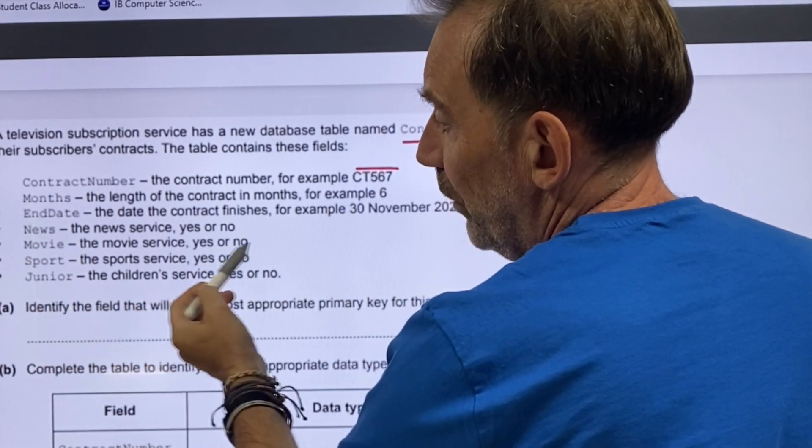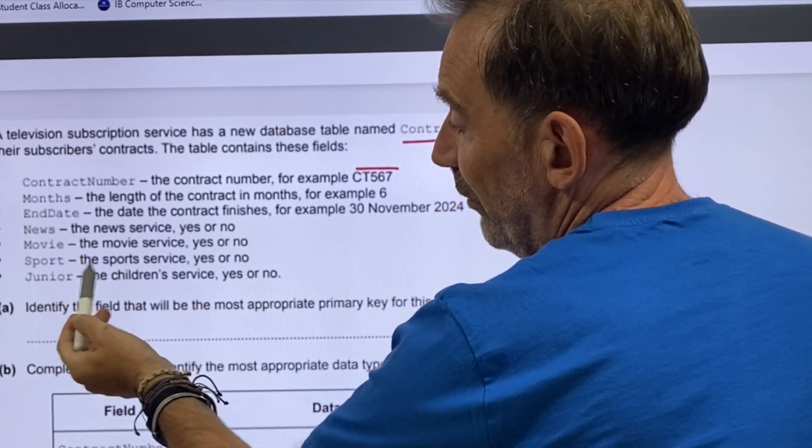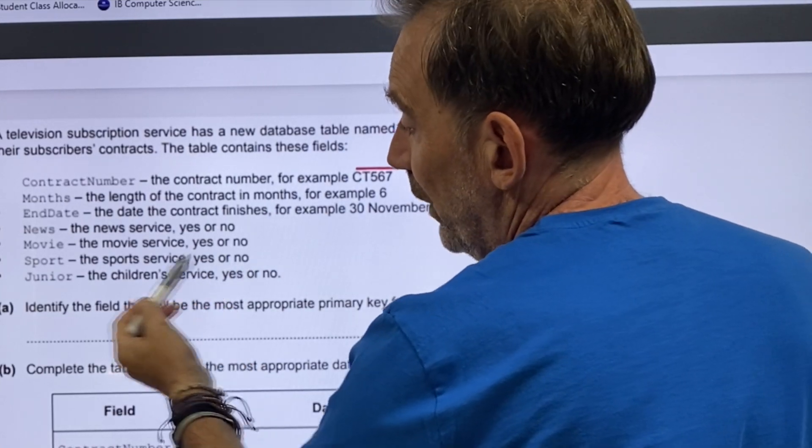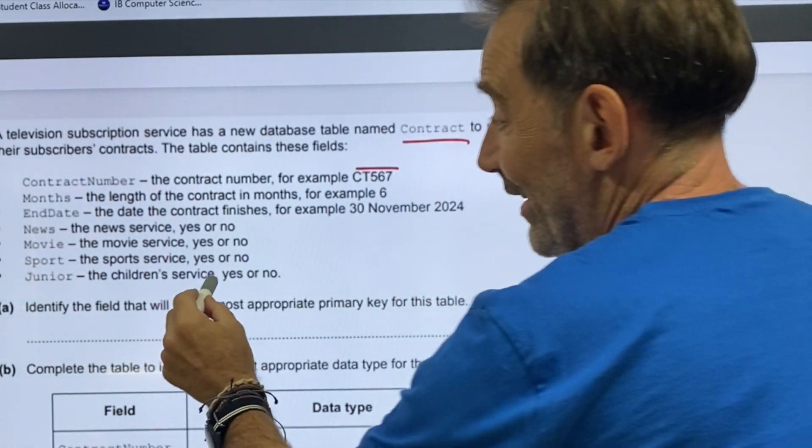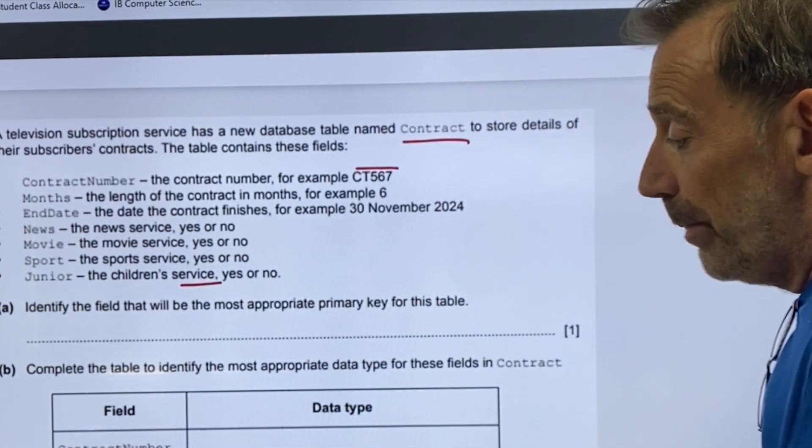News, Boolean. Movie, Boolean. Sport, does it have a sports service? Yes or no. Boolean. Junior, is there a children's service? Yes or no. Boolean.